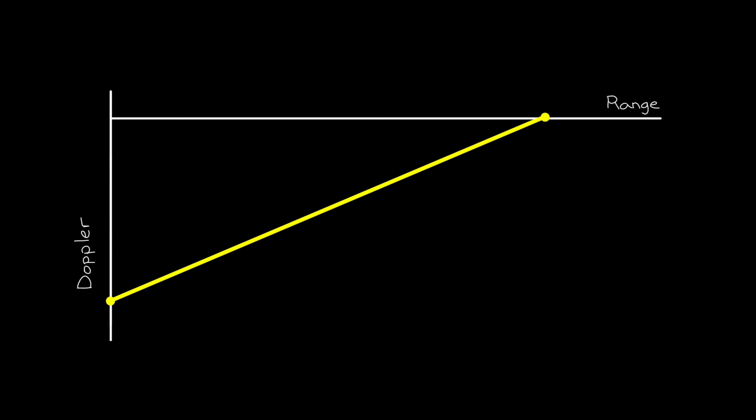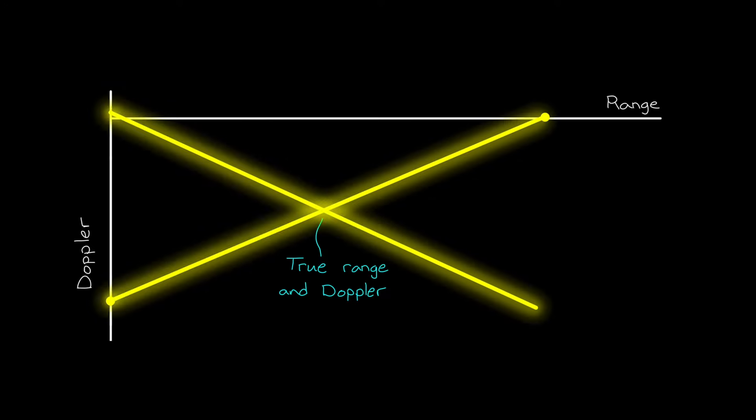Back on the range Doppler chart, the beat frequency for downward sloping modulation produces a second possible set of answers, and the intersection of the two is the true range and Doppler of the object. Of course, these aren't crisp lines because of the range resolution of the radar and there's noise and interference, but conceptually, this is how triangular frequency modulation can determine range and radial velocity of a single object.